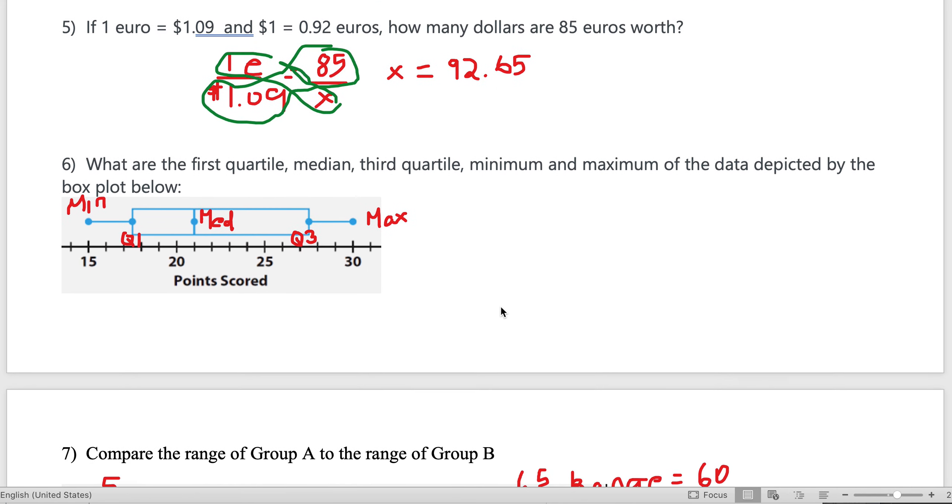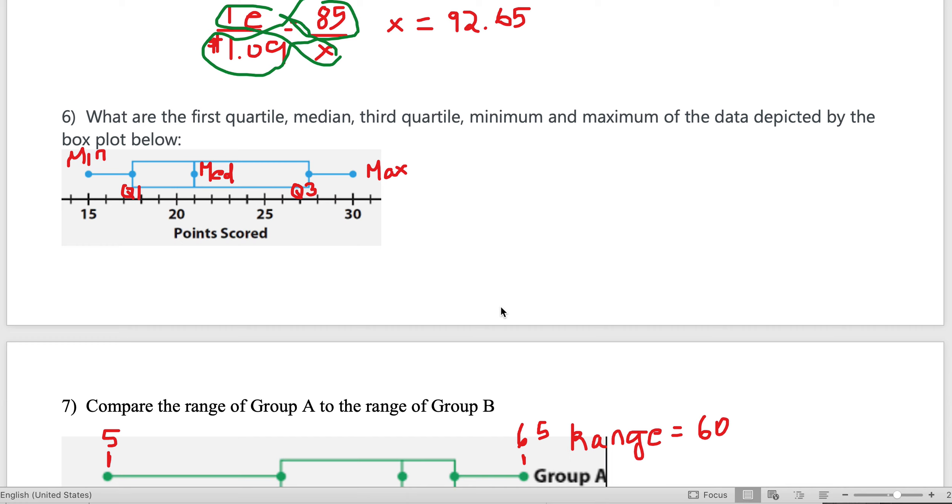What are the first quartile, median, third quartile, minimum, and maximum of the data depicted on the box plot below? This is always your minimum right here, then after your minimum we go to the first quartile, then the median, then third quartile, and then the maximum.